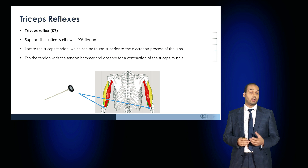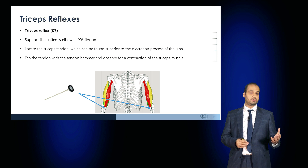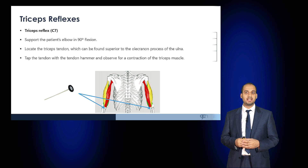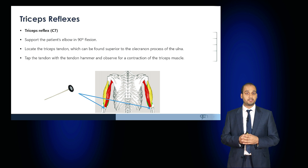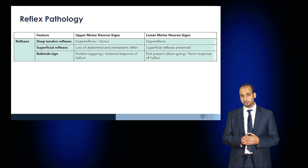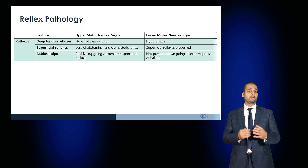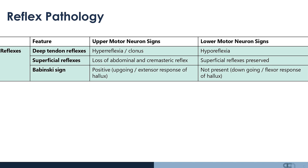Superficial reflexes are lost with upper motor neuron conditions and preserved with lower motor neuron signs. When examining reflexes in the lower limbs, the Babinski reflex is usually positive in upper motor neuron conditions.